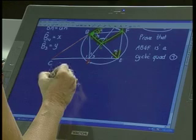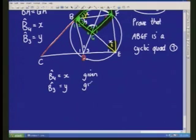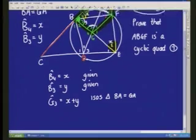We said that B4 was equal to X because we were given it. We said that B3 was equal to Y because we were given it. We then said that G3 was equal to X add Y because we had an isosceles triangle because we were given that BA was equal to GA.